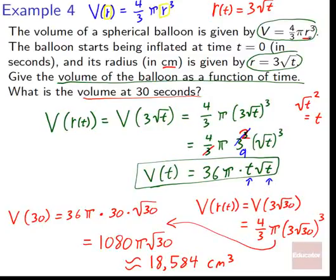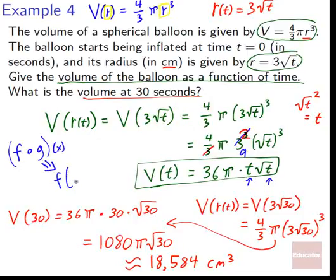That completes it for composite functions. When you see that circle, it means 'composed with,' but it's much easier to break it into f of g of x or g of f of x, depending on the order. Remember, whoever's closer to the input goes first — so f circle g of x becomes f of g of x. And a circle b circle c of x becomes a of b of c of x. Glad to have taught you composite functions — it will show up in a variety of places. We'll see you at Educator.com later.